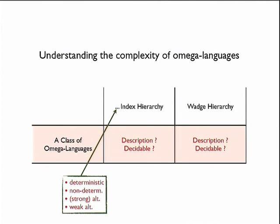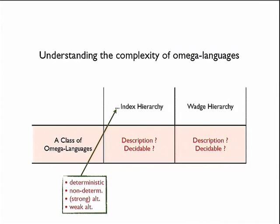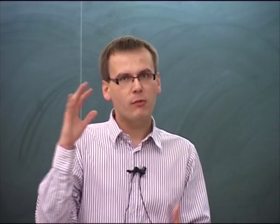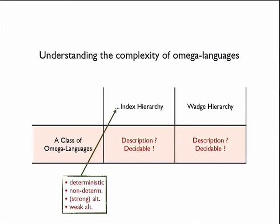Let's focus on the index hierarchy. If one tries to understand complexity of omega languages of trees, one often wants to describe the two hierarchies — understand which languages are more complex in terms of those hierarchies — and also describe the whole hierarchy, giving a classification of languages. The typical questions are: a description of the hierarchy, and if possible an effective description — an effective characterization of every level.